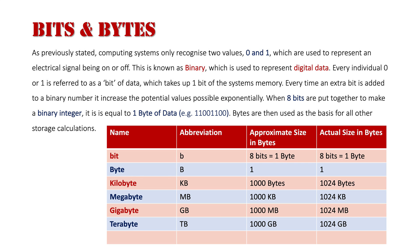Does anyone here know what the next one is after a terabyte? Think about it before I tell you. Obviously, in 10 years' time, it will probably be the norm as well. Following a terabyte is what's known as a petabyte — abbreviated PB. You can see the pattern: KB, MB, GB, TB, and now PB. That's 1024 terabytes. Having a hard drive of 1024 terabytes probably sounds huge to you — that's how I felt about terabytes 10 years ago.